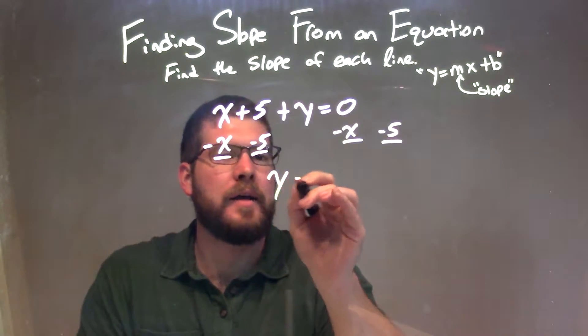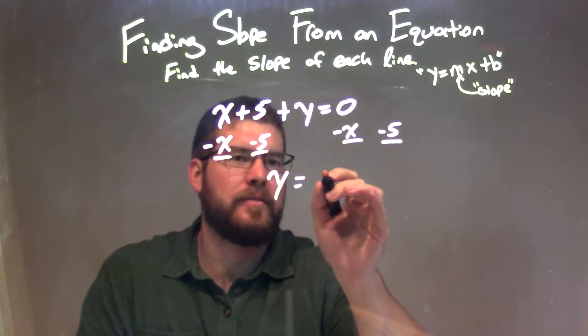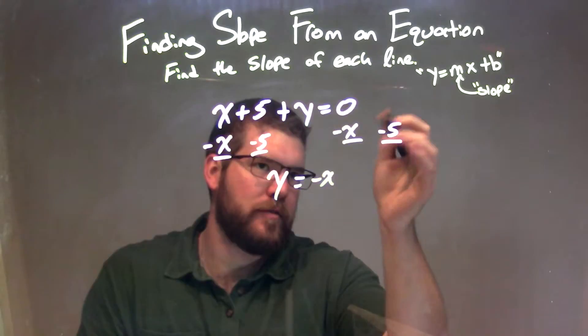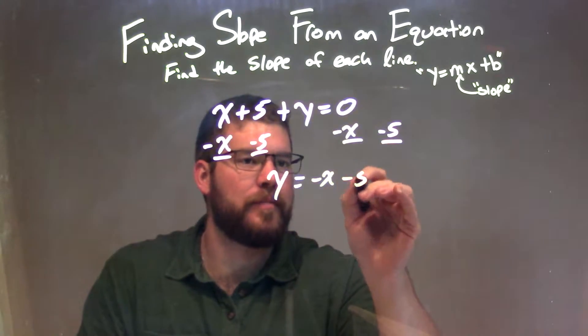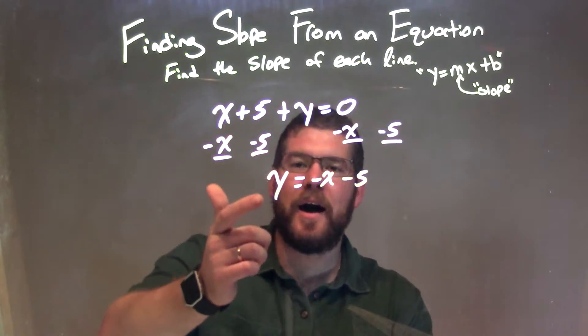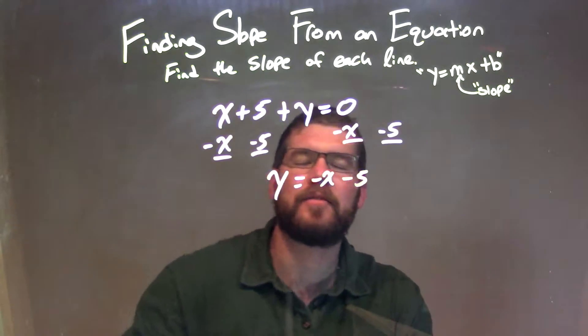That leaves me with y isolated. 0 minus x is negative x, and then minus 5 is left in there, so it's going to be minus 5. So y isolated now is equal to negative x minus 5.